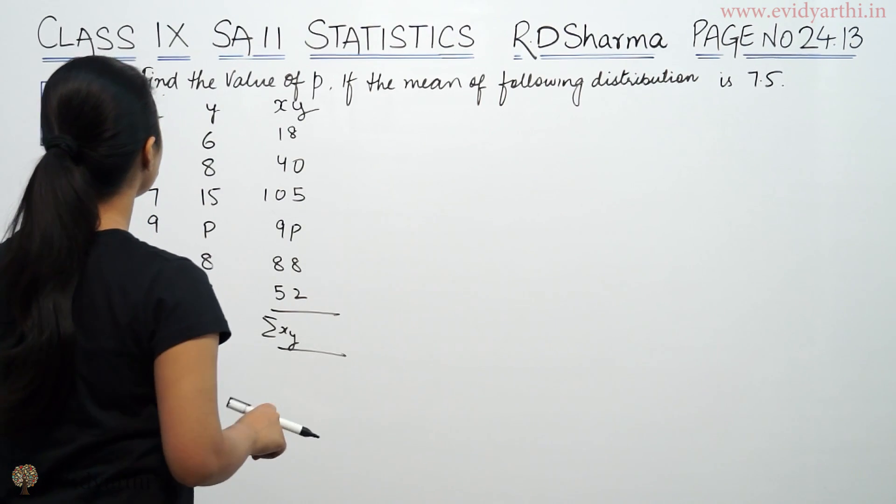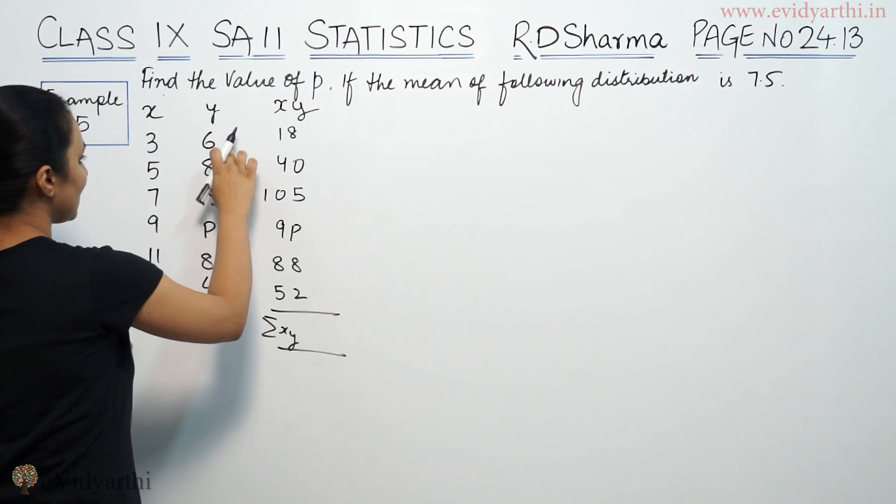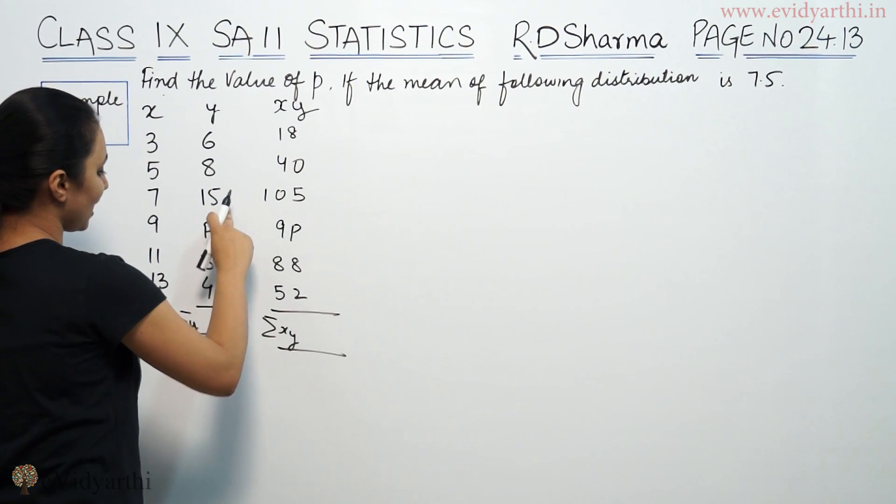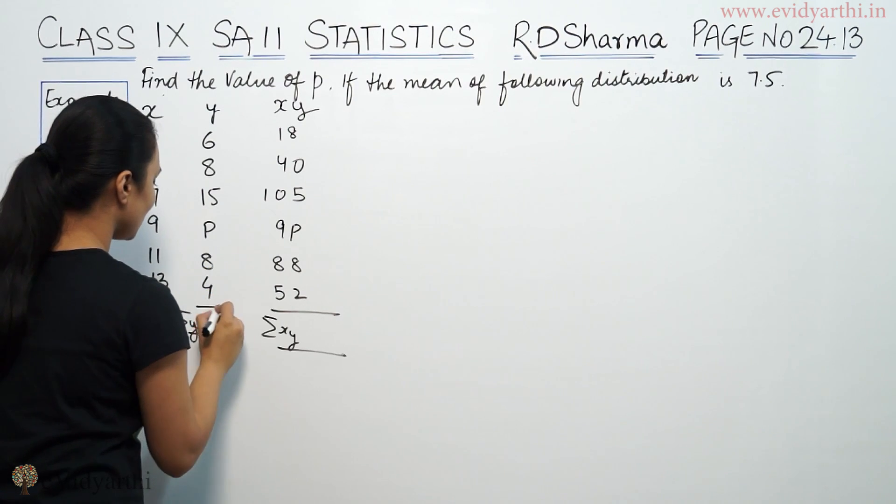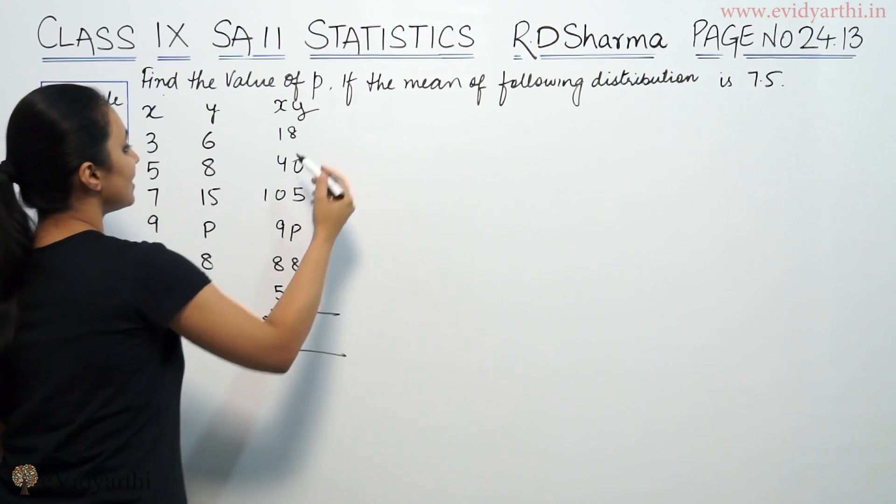So, now we have to find the sums. Y sum is 6 plus 8 is 14, 14 plus 15 is 29, 29 plus 8 is 37 plus 4, 41 plus P. Because P is variable, I will use it now.